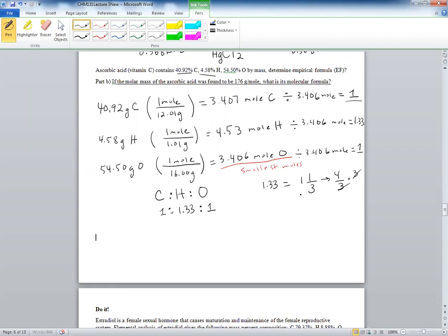So that means we have to multiply the entire thing by 3. And that would give us 3 to 4 to 3, which means we have C3H4O3, and that is our empirical formula.